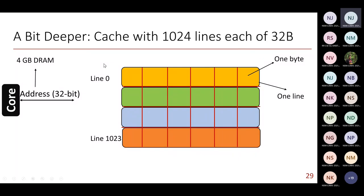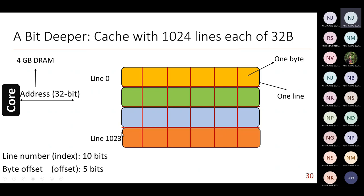The first job is to find which line contains our data. Since there are 1024 lines, we need 10 bits to identify the line of interest — we call these the index bits. But the processor may not demand all 32 bytes of a line; it may demand a byte or two bytes, corresponding to different data types like integer, character, or floating point. For that, we need 5 bits — called the offset bits — to find which particular byte we're interested in within a line.